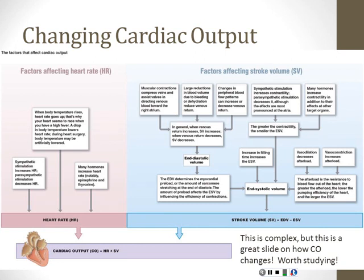As plasma volume goes up — as the amount of blood in the system increases — end diastolic volume goes up. When plasma volume goes down, venous return goes down, which means end diastolic volume goes down, and ultimately cardiac output goes down. In a patient who is dehydrated, their cardiac output and blood pressure may be affected because they don't have adequate plasma volume. We'll see how the kidney can affect this variable when we get into blood pressure.